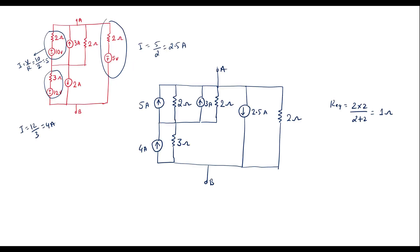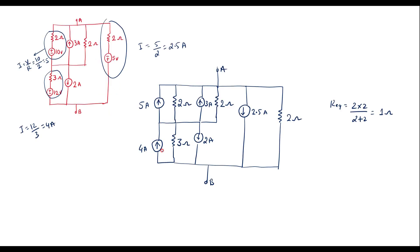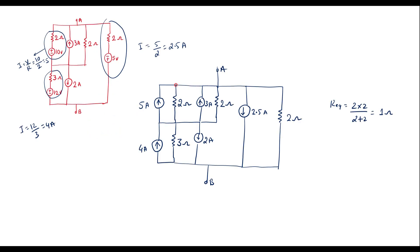This is 1 ohm. Similarly, here we have 4 amp and here we have a 2 amp current source. The 4 amp and 2 amp are in parallel but opposite in direction, so if directions are opposite we have to take the difference. The difference of these two current sources is 2 amp, that is 4 amp minus 2 amp, and we have to follow the direction of highest magnitude. The direction of highest magnitude is the up direction, so I can replace these two current sources by a single current source of magnitude 2 amp. This 3 ohm is connected in parallel with this current source.